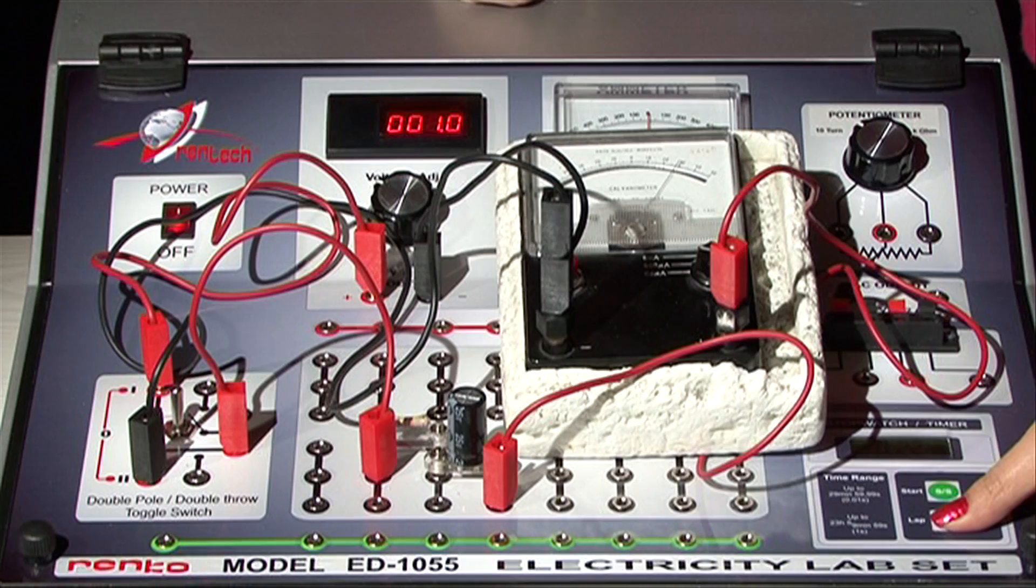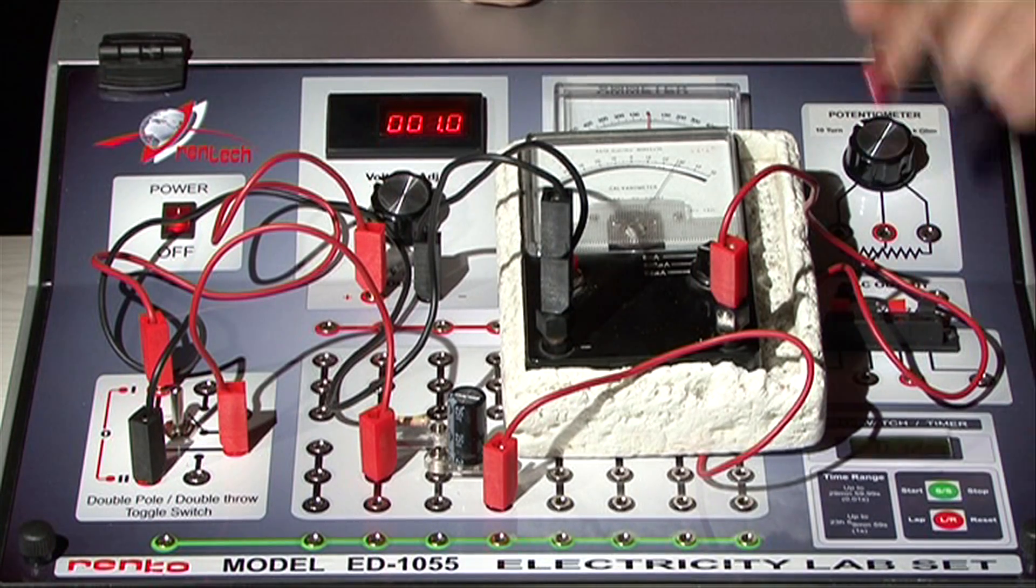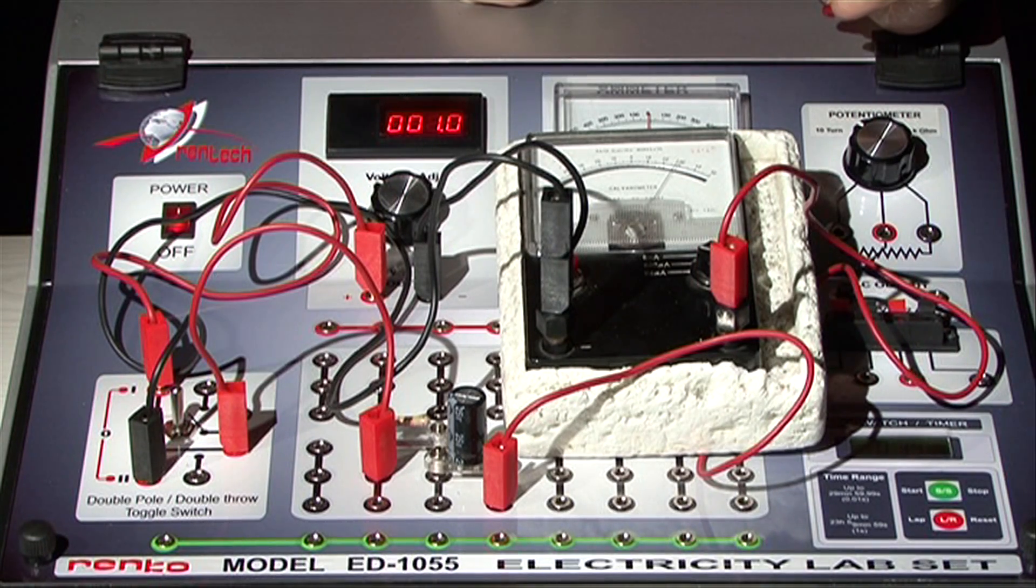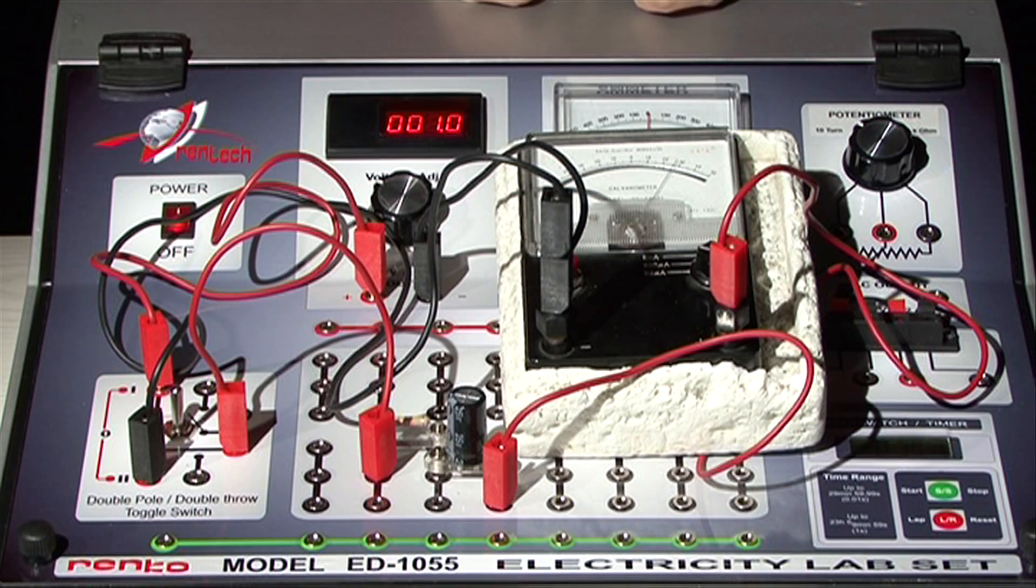When you press on the red button once again, the display catches the timing of the chronometer without interruption. For instance, it continues from the 32nd second here.